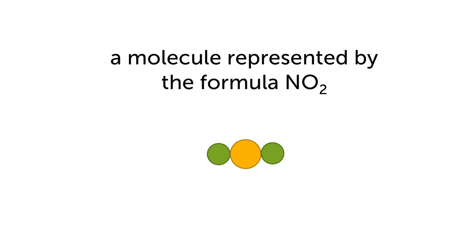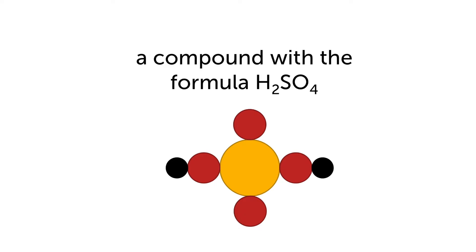What you see here is a molecule of nitrogen dioxide with the formula NO2. For each molecule there is one nitrogen and two oxygen atoms joined together. Here you see a molecule of sulfuric acid, H2SO4. There are two hydrogen atoms, one sulfur atom and four oxygen atoms.